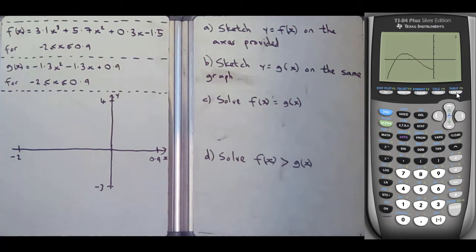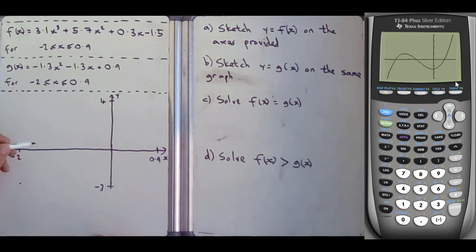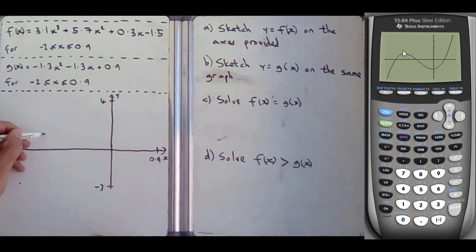You can see a nice cubic shape — with cubics you get a maximum of two turning points. I need to transfer that onto the sketch. Because we programmed the window, that calculator screen is exactly this screen here. Key points: it starts from the bottom left, comes up, has a maximum just above the x-axis a bit less than halfway, then goes down to a minimum somewhere around there, then goes up to the top right corner.